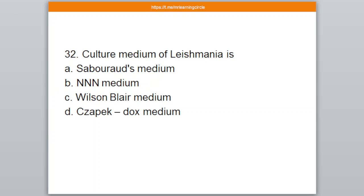Question number 32. Culture medium of Leishmania is — A: Sabouraud's medium, B: Triple N medium, C: Wilson and Blair medium, D: Zapag-dox medium. The correct answer is option B — Triple N medium. Please tell me the full form of Triple N in the comment section.